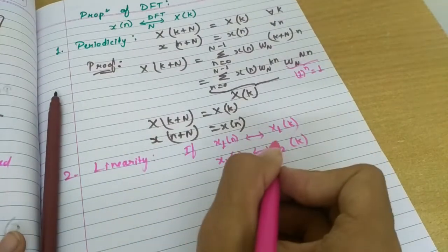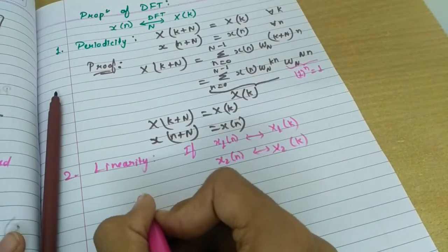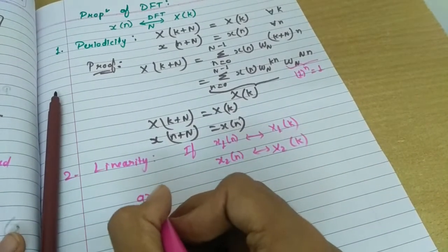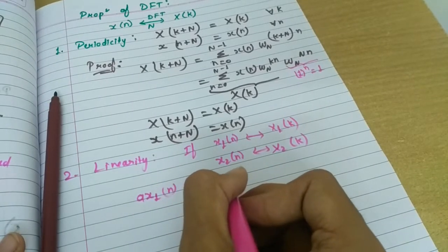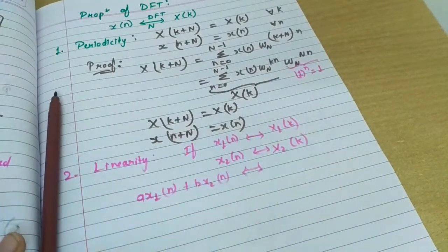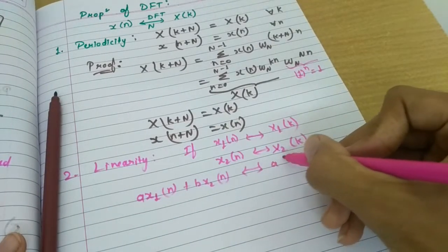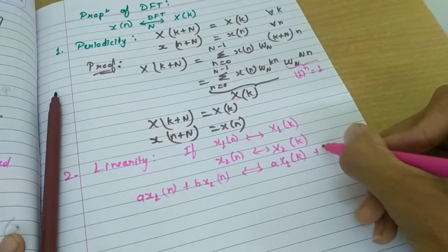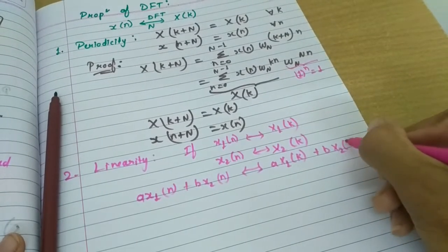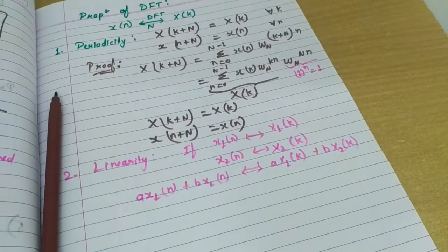Then, for some constants A and B, non-zero constants A and B, A X of n plus B Y of n has DFT A X of k plus B Y of k. You can prove it on your own. It is easy.